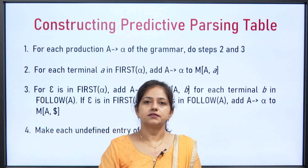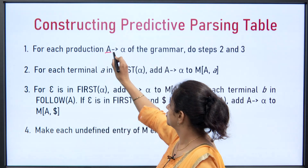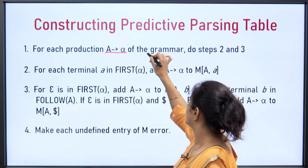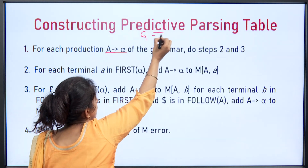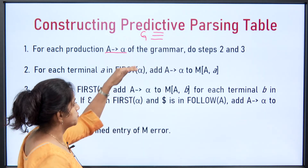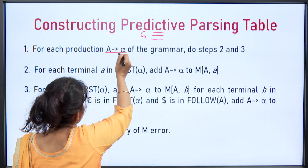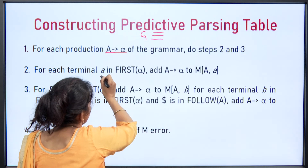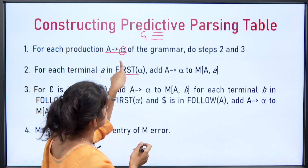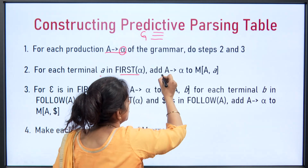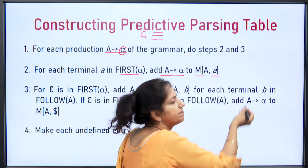Now we will see how to construct the predictive parsing table. Suppose there is a production A → α. For each production A → α of the grammar, we repeat steps 2 and 3. For each terminal a in FIRST(α), we add the production A → α to M[A, a]. Here we obtain FIRST of the right-hand side, and for each terminal in it, we add the production A → α to the parsing table at index M[A, a].